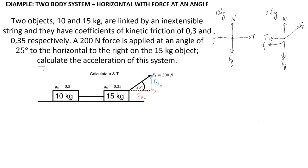We can calculate the normal force for each object. For the 10 kilogram object, only the force of gravity acts downward on it. The force of gravity is mass times gravity, therefore 98 newtons, and so the normal force is 98 newtons.